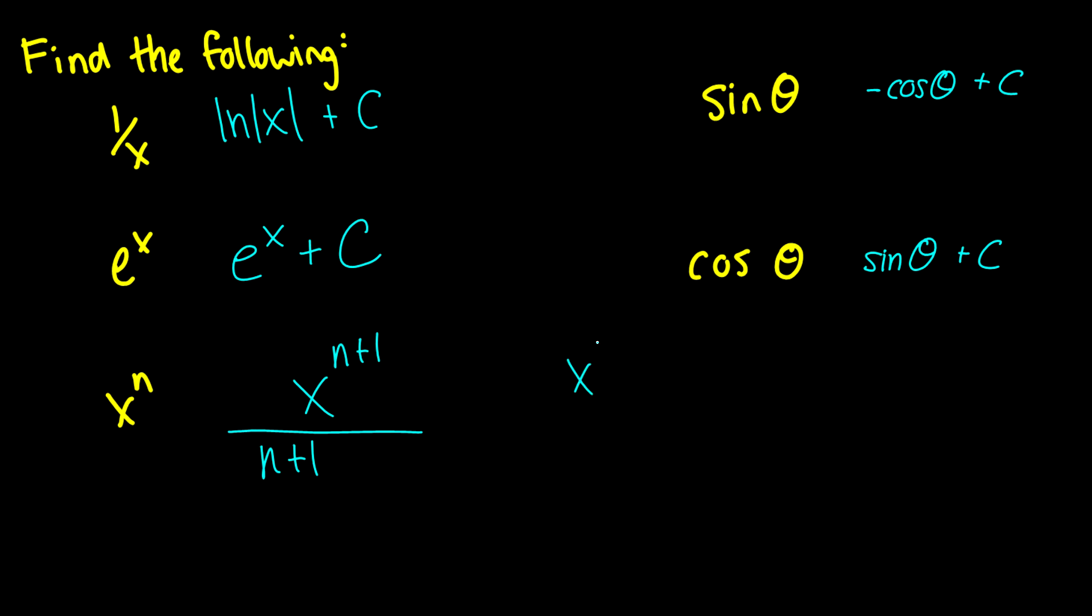This might seem a little bit not intuitive, but think about its derivative. We have then x^n, and we bring n+1 outside. Therefore, we have to divide by n+1 to get them to cancel.